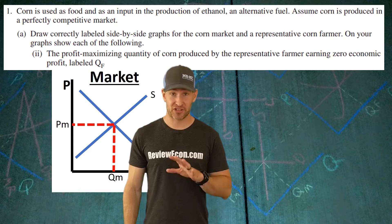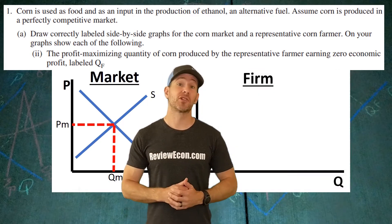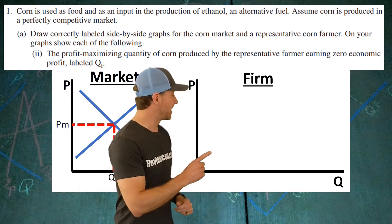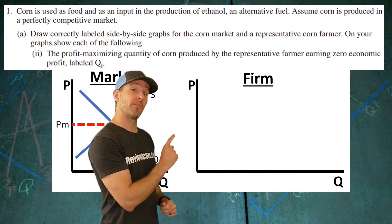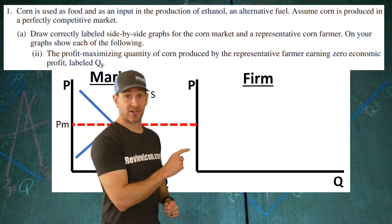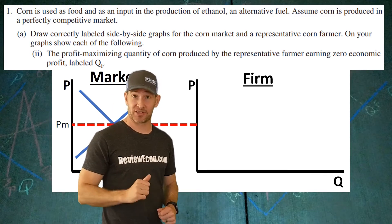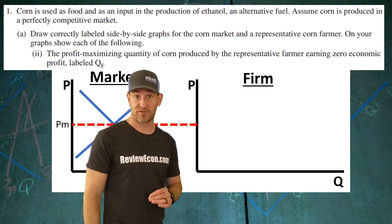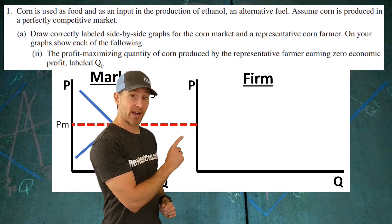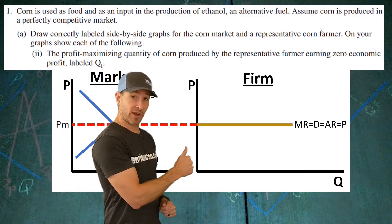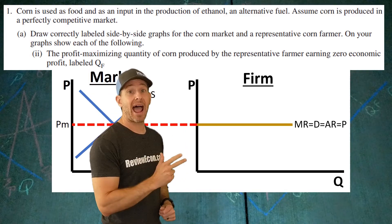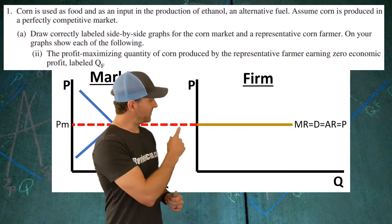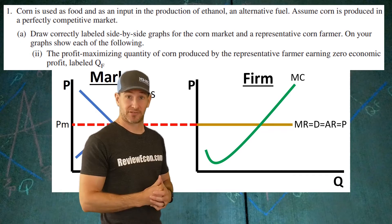Now we're going to turn our attention to the firm graph. Remember the firm is earning zero economic profits — that means they're in long-run equilibrium. We're going to take the equilibrium price from the market over to the graph. Remember, firms are price takers in a perfectly competitive market, so they have no influence on the price. That market price becomes the firm's marginal revenue, demand, average revenue, and price — Mr. DARP, as many teachers call it. Have your marginal cost curve drawn in — it looks like a Nike swoosh.